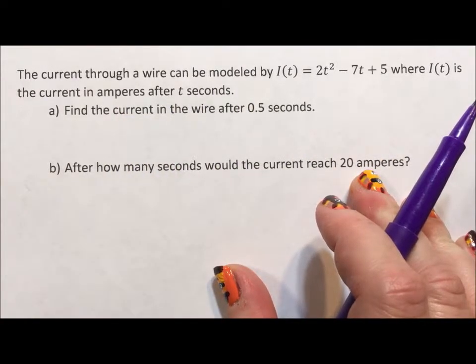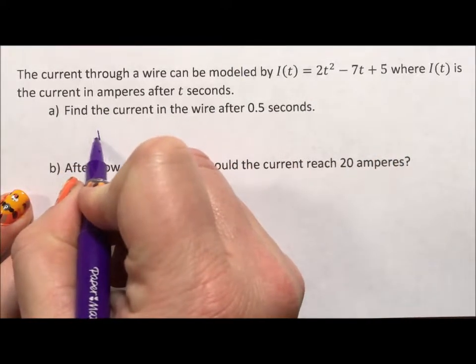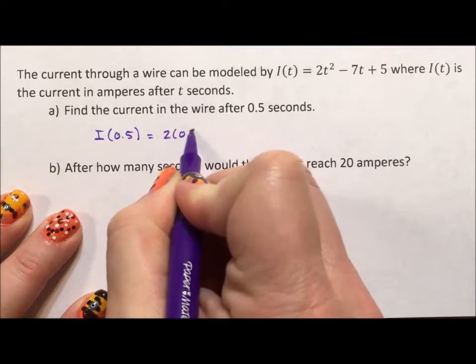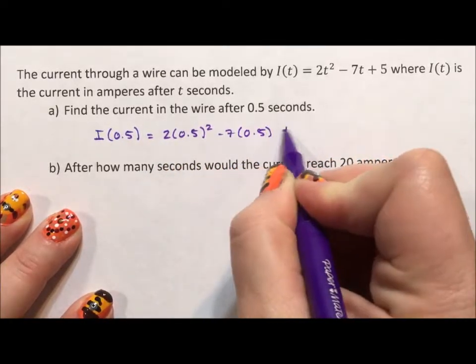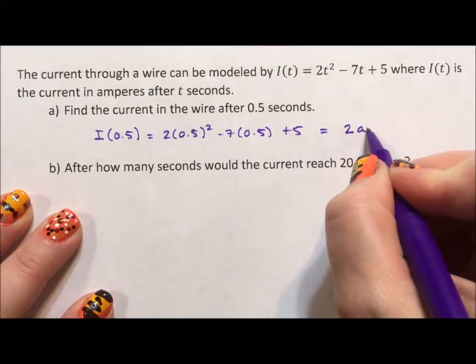Let's find the current in the wire after 0.5 seconds. So this is just saying I(0.5) equals 2 times 0.5 squared minus 7 times 0.5 plus 5. We throw that into the calculator and we get 2 amperes.